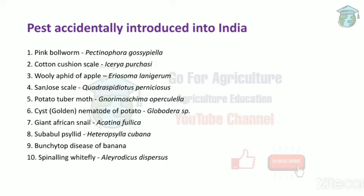San Jose scale, Quadraspidiotus perniciosus, from China; potato tuber moth, Phthorimaea operculella, from Italy; cyst or golden nematode of potato, Globodera species, from South America; giant African snail, Achatina fulica, from Kenya; sugarable psyllid, Heteropsylla cubana, from Italy; bunchy top disease of banana from Australia; and spiraling whitefly, Aleurodicus dispersus, from Central America.